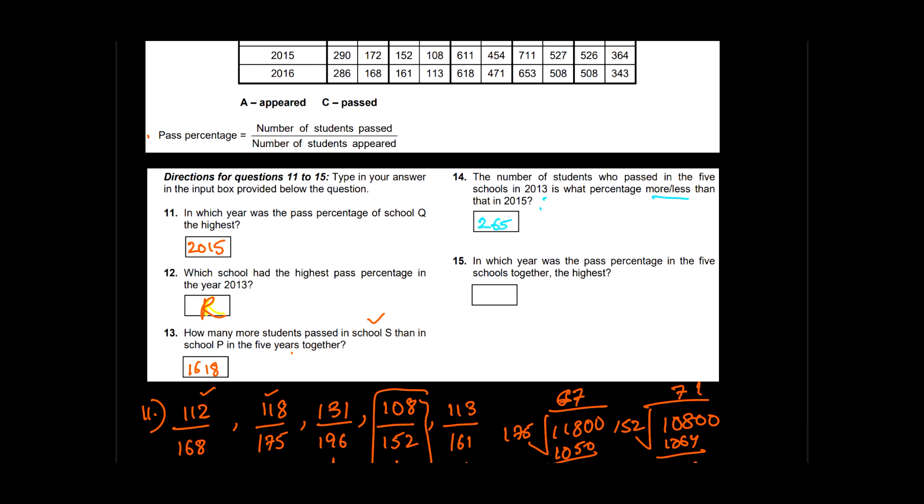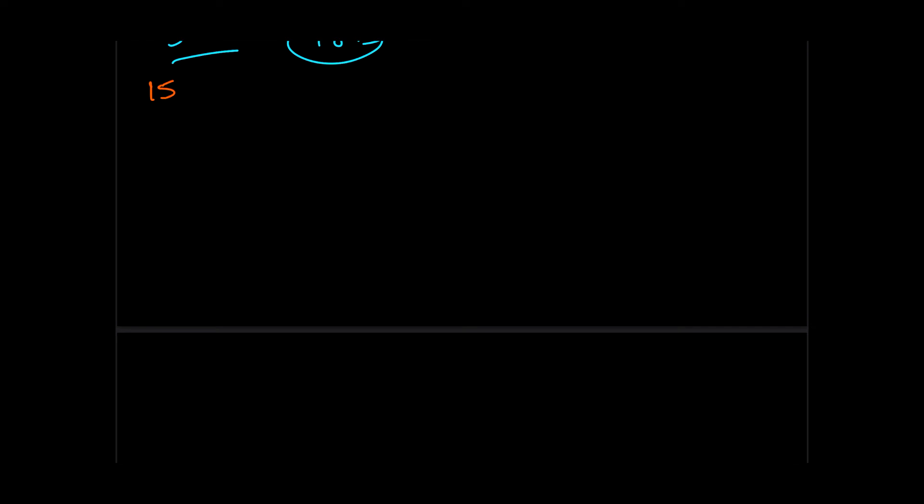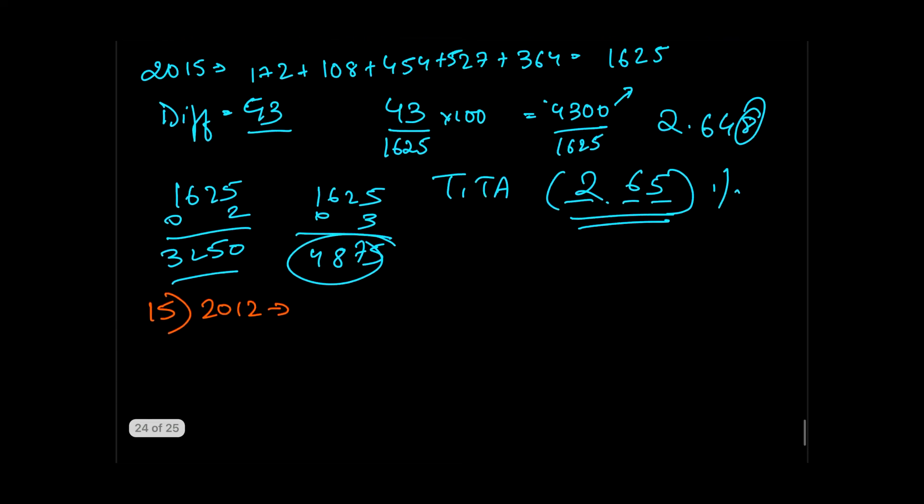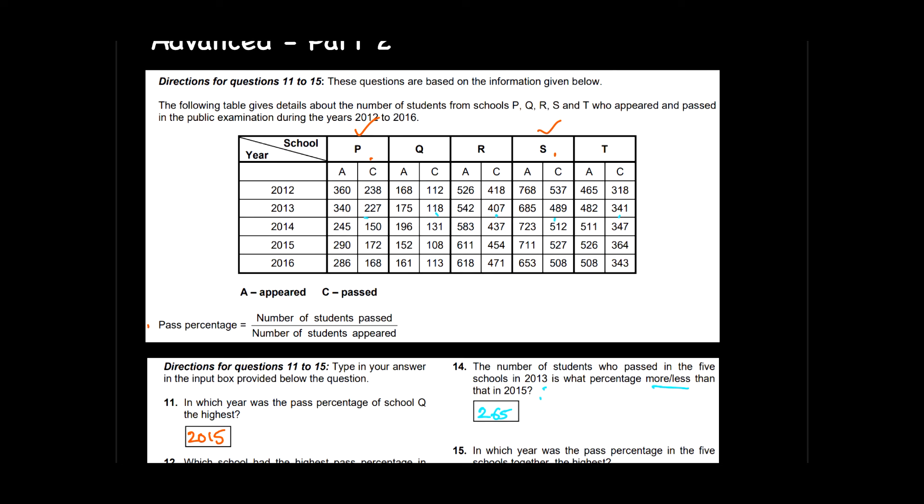The last question for the day: in which year was the pass percentage in five schools together the highest? Now this is yet another very big comparison. What we will be doing in question number 15 is comparing the data across every year. That means in 2012 there are five schools, right? So we will be comparing the data of the five schools.